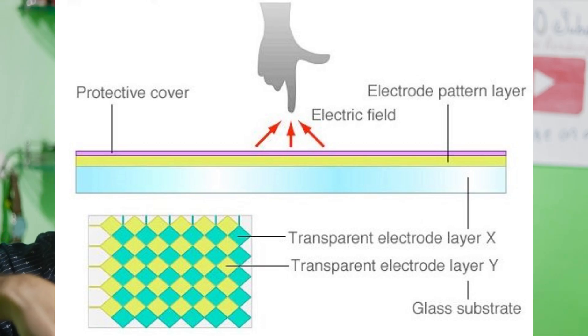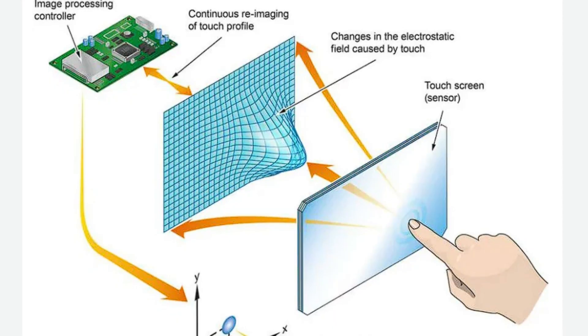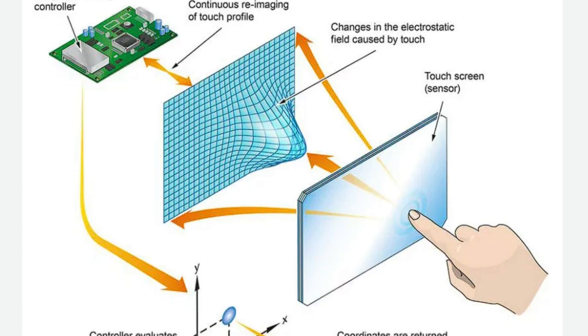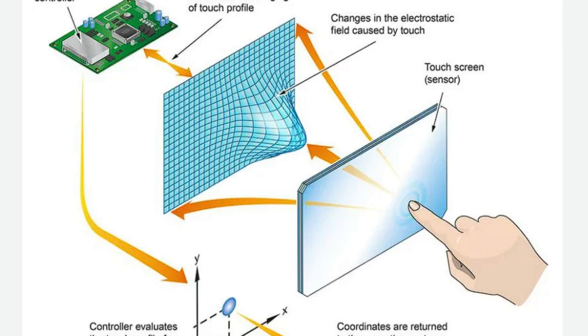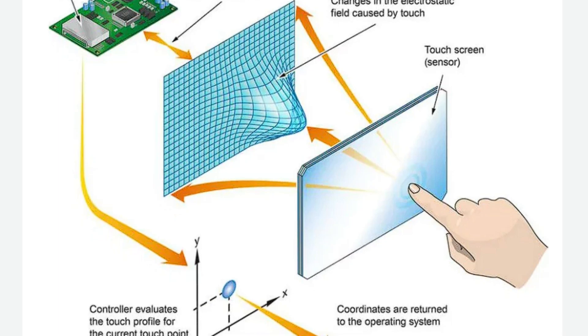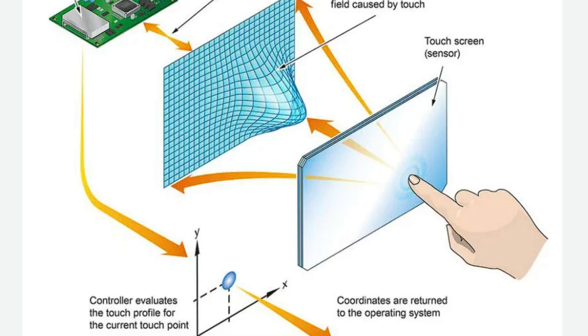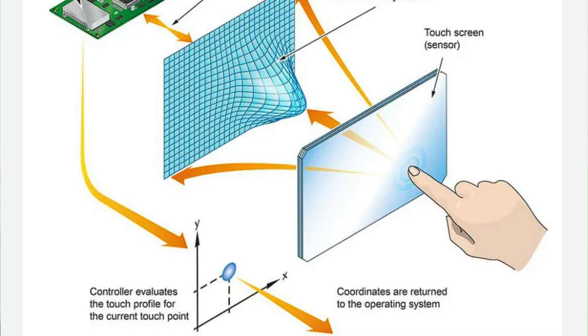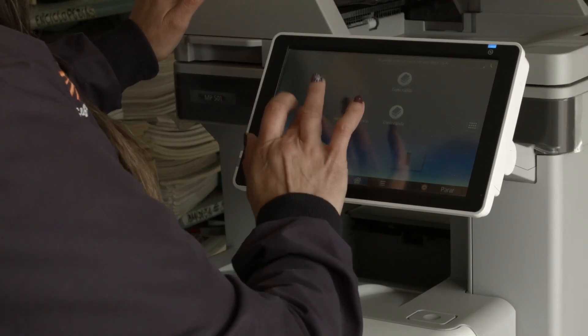Whenever a user interacts with the touch panel, some of the charge gets absorbed by the conducting material such as our hand, the tip of our finger. This electrical charge is very very minimal — so negligible that we cannot even feel an electric shock through our screen. This charge gets absorbed by the fingers, the whole capacitance gets disturbed, and by using the X and Y axis the point of disturbance is calculated through the processor. This is how a person can interact with the capacitive screen.